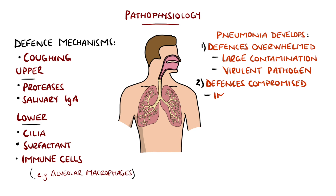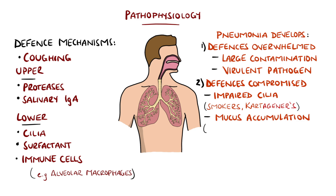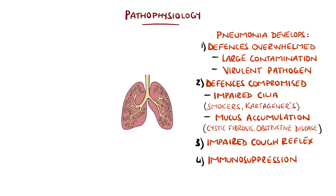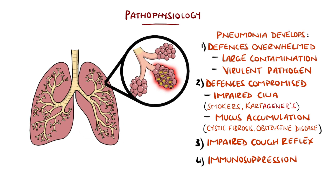Other factors include compromised defense mechanisms, such as impaired cilia function seen in smokers and those with Kartagener disease, mucus accumulation as in obstructive disorders or cystic fibrosis, an impaired cough reflex, or a state of immunosuppression. It is the alveoli in particular that are affected, and these factors can be influenced by changes in normal flora — such as in malnutrition, systemic illness, and hospital exposures.